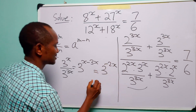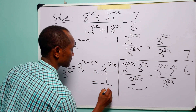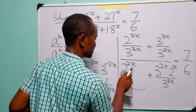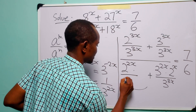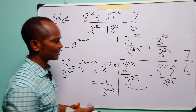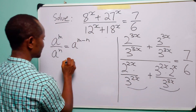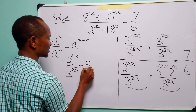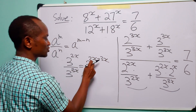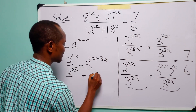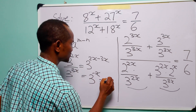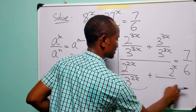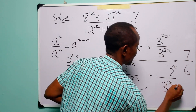Remember that when we have a negative index, we can write this as 1 over 3 to the power of 2x. So we can replace those two terms with 3 to the power of 2x in the denominator. Similarly, 3 to the power of 2x divided by 3 to the power of 3x equals 3 to the power of 2x minus 3x, which is 3 to the power of minus x. With negative indices, this becomes 1 over 3 to the power of x.